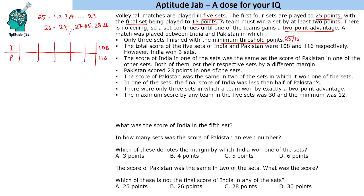Pakistan scored 23 points in one of the sets. Now, 23 points can be scored with India winning 25-23, or alternatively Pakistan may score 23 in one of the sets and India scores 21. So either Pakistan scores 23 in a normal set and loses, or Pakistan scores 23 in the 5th set and wins. We will keep this condition on hold for now.